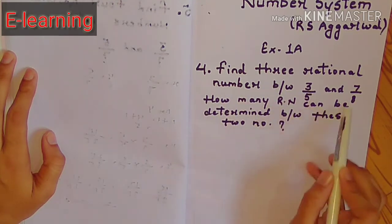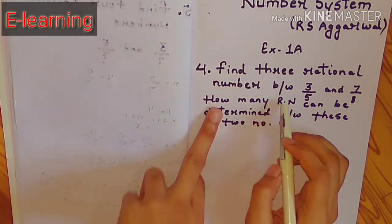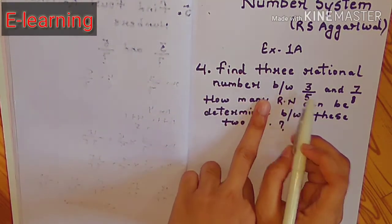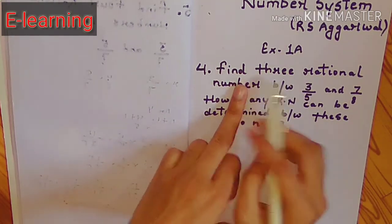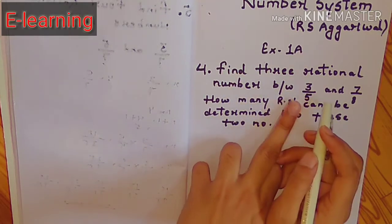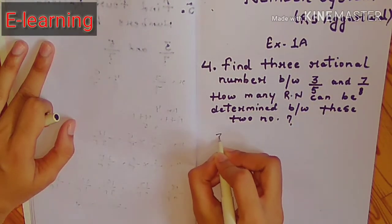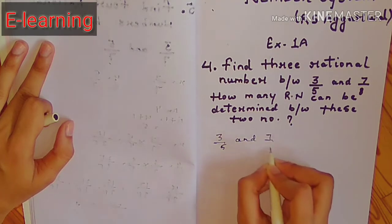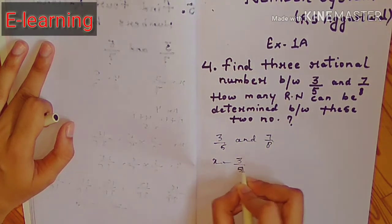How many rational numbers can be determined between these two numbers? In the last video we solved the third question, but here we don't use the formula — here we use a trick. So 3/5 and 7/8: this means 3/5 is x and 7/8 is y.